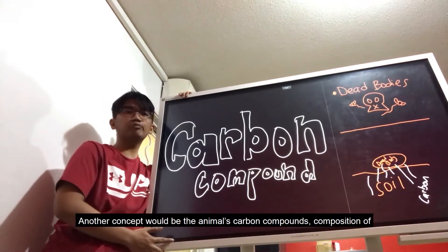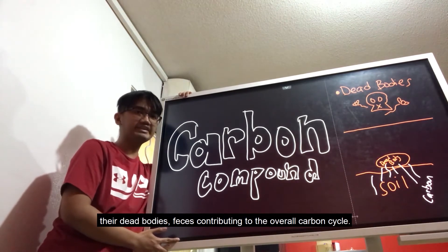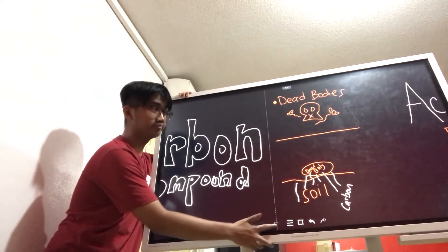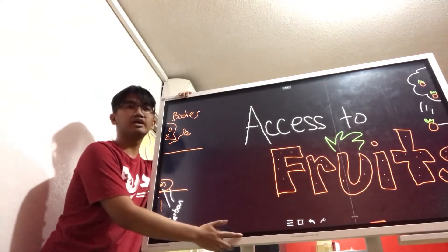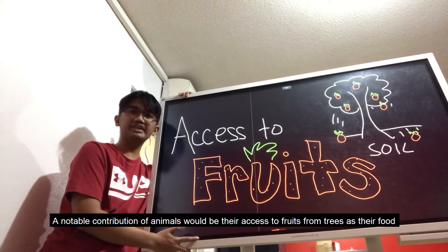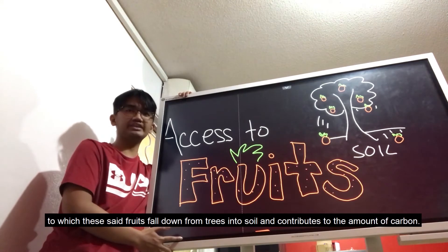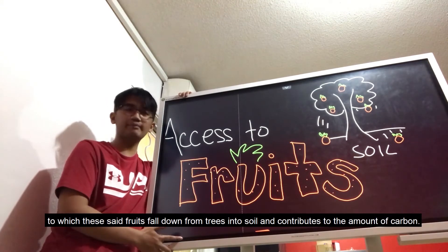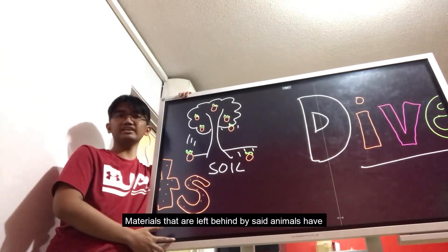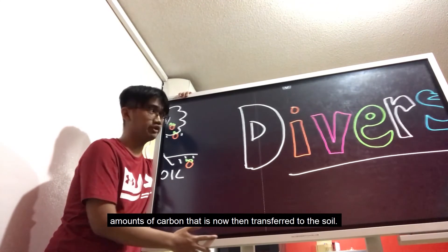Another concept would be the animals' carbon compounds — the composition of their dead bodies and feces — contributing to the overall carbon cycle. A notable contribution of animals would be their access to fruits from trees as their food, which fall down from trees into soil and contribute to the amount of carbon. Materials that are left behind by said animals have amounts of carbon that are now being transferred to the soil.